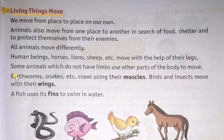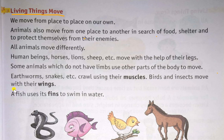Some animals which do not have limbs use other parts of the body to move. For example, snakes and earthworms use their muscles to crawl. Birds and insects move with their wings.